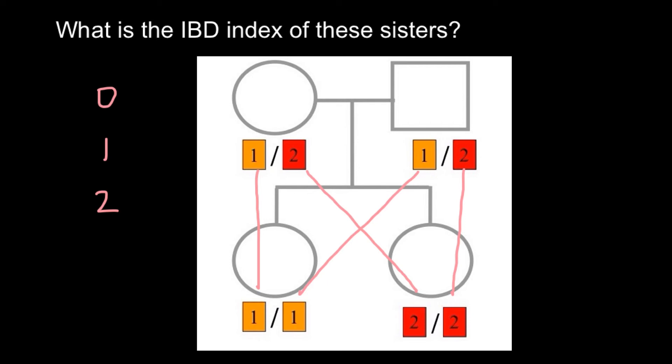What can we tell? None of the alleles would be the same, so the IBD index for these two sisters for this particular locus would be zero.